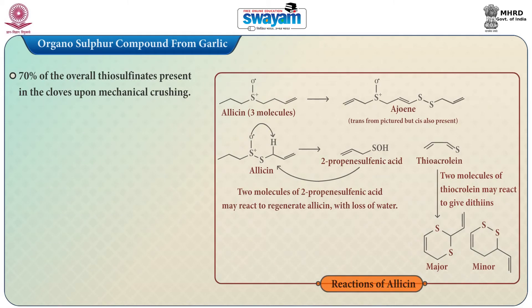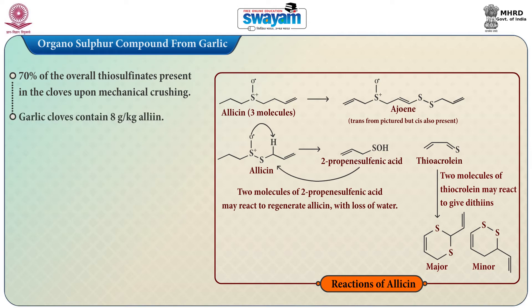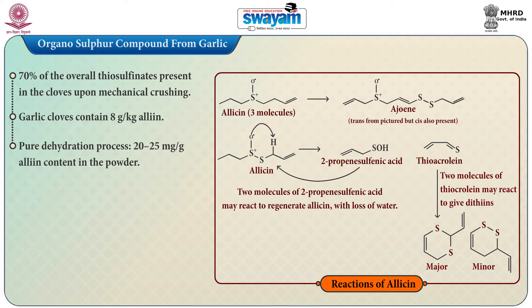Allicin represents about 70% of the overall thiosulphinates present in the cloves upon mechanical crushing. On average, garlic cloves contain 8 grams per kg of alliin. A pure dehydration process with no loss of ingredients would result in 20–25 milligrams per gram alliin content in the powder.